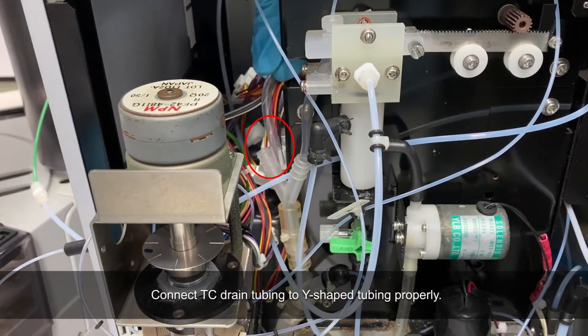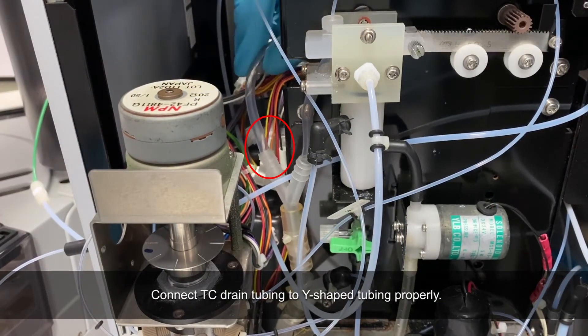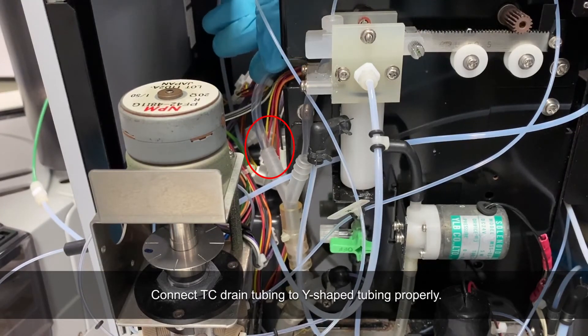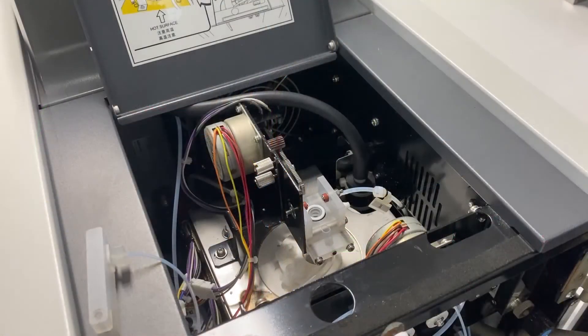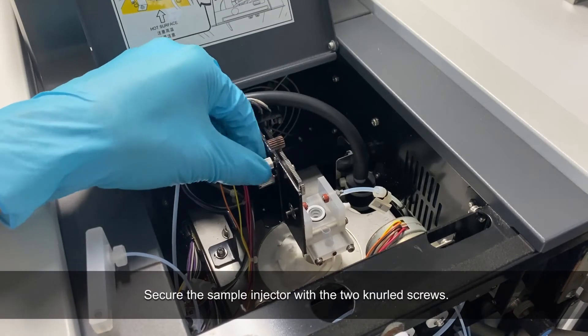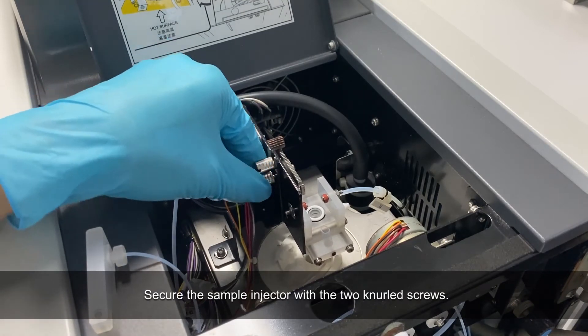Connect the TC drain tubing to the wire-shaped tubing properly. Secure the sample injector with the two screws.